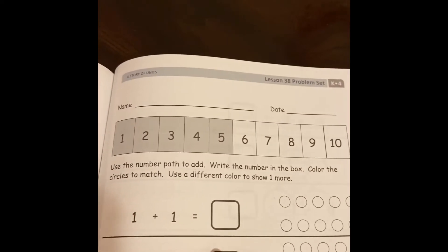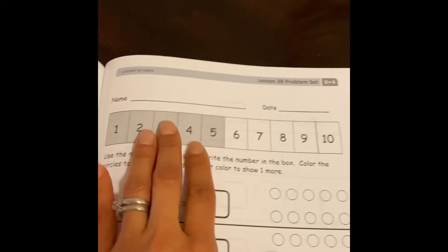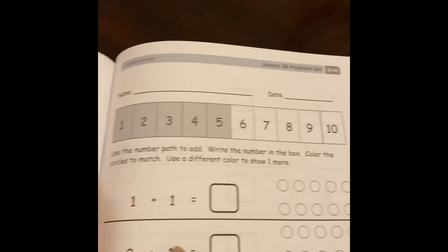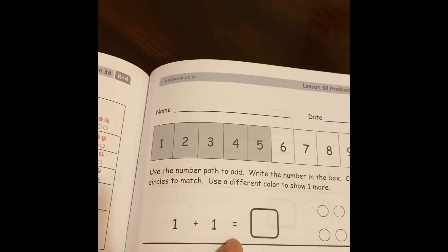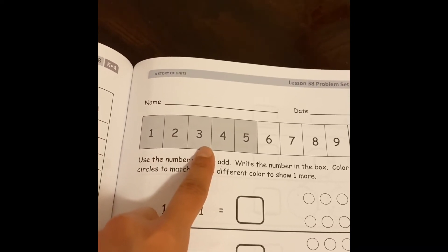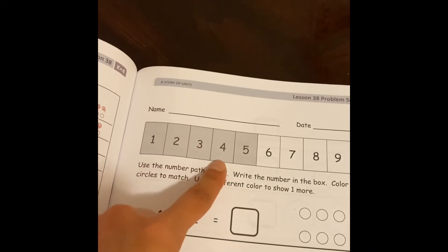So we're back to zero, which is great. You guys can continue practicing this on your own. So using the number path, we're going to use it to show what's one more. So I'm just going to give you a quick example of that. So we're going to do this number sentence, and we're going to show it using our fingers with the number path.